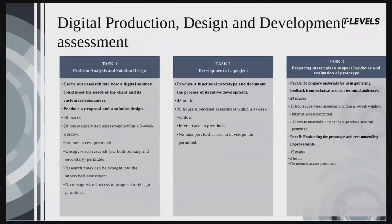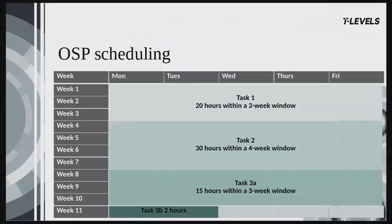Now we'll have a look at the tasks that make up the project. There will be one occupational specialism project series per academic year, due to the amount of content and synopticity required as a result of the linear assessment model. To give you as much teaching time as possible, the project will take place over several weeks across the spring and summer terms. The assessment window is set by Pearson and published in the key date schedule, which is located on the digital TQ page. On screen is an example of a timetable showing a notional view of how the tasks are intended to be organised. The tasks have been spread over 11 weeks.